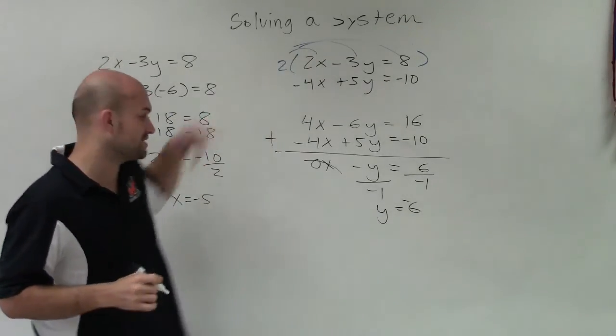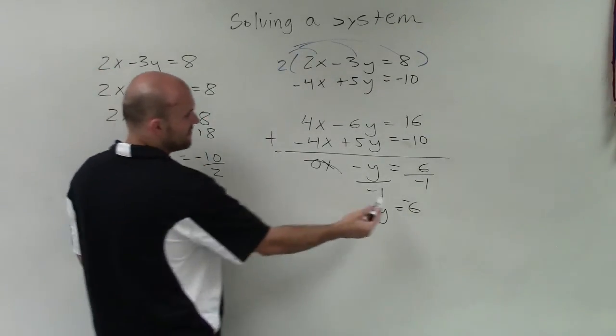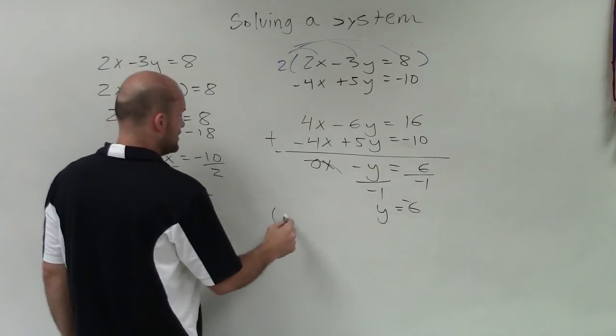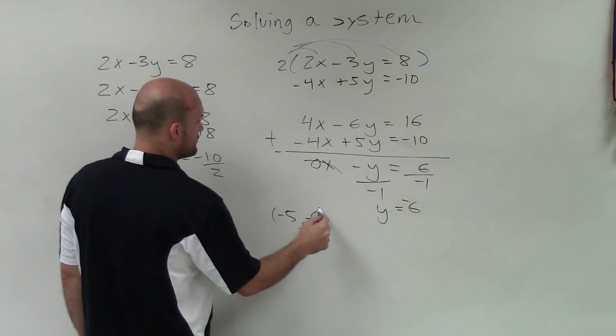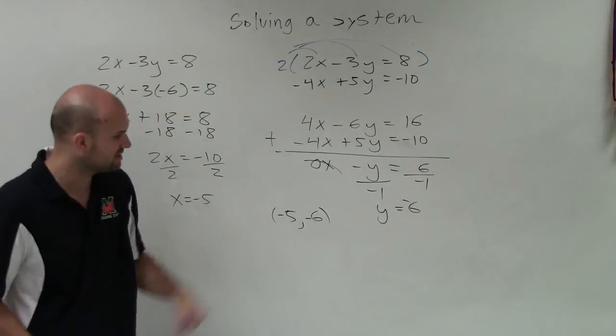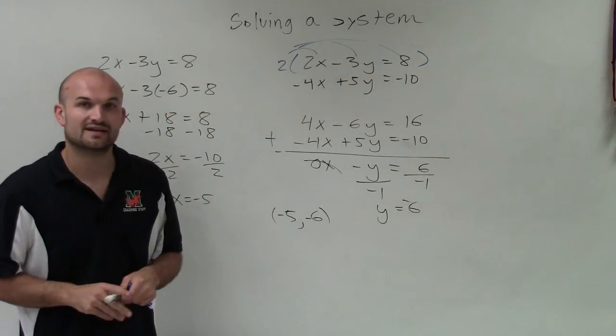Therefore, the solution of this equation is true when x equals negative 5 and y equals negative 6. You could say the intersection of those two equations, if we were to graph them, would intersect at the coordinate point negative 5, negative 6. Thanks.